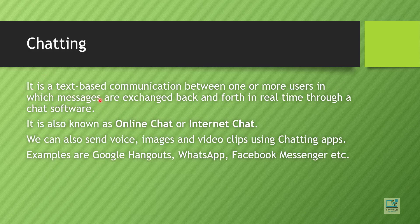Next is chatting. It is primarily text-based communication, though nowadays chatting applications also let you share audio, video, or images. We can exchange messages back and forth in real time through chat software. Real time means immediately with almost no delay — if you send a message at a certain time, your friend receives it within one or two seconds. It is also known as online chat or internet chat. Examples include Google Hangouts, WhatsApp, and Facebook Messenger.